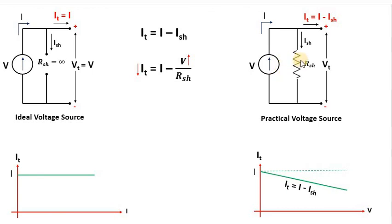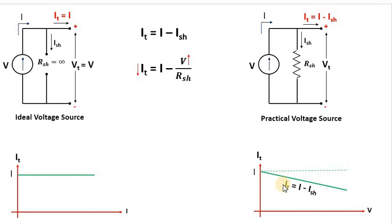In the practical current source, there is a finite resistance Rsh in parallel with the current source, so It = I − Ish. The voltage across this resistance is V, so Ish = V / Rsh. If the value of V increases, Ish increases and It decreases. As shown in the graph, It decreases linearly with respect to voltage. This is how a practical current source works.